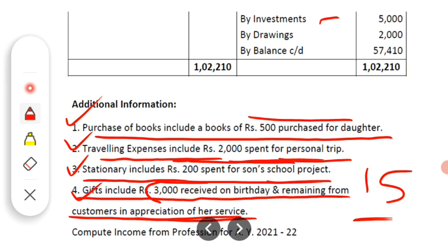Then investment of Rs. 5,000 — this is an asset, not an expense, so it is ignored. We do not consider assets when calculating professional income. And the last payment, drawings of Rs. 2,000, is a personal item and is also ignored.